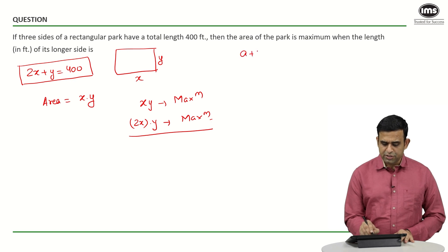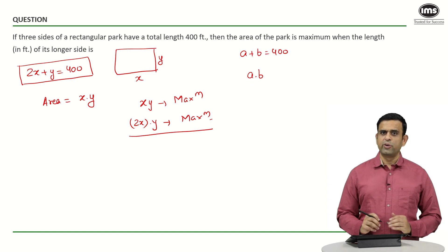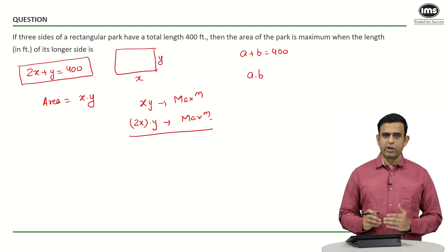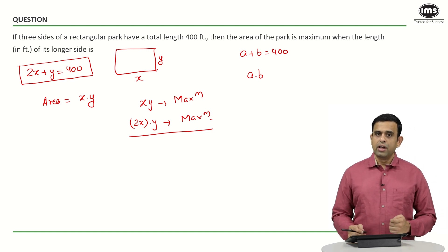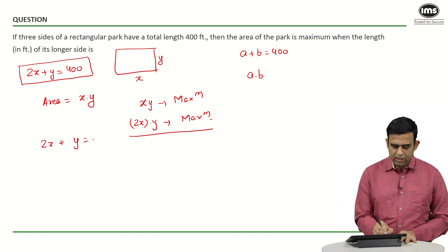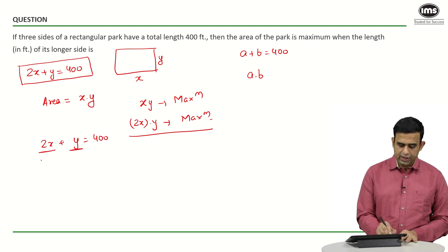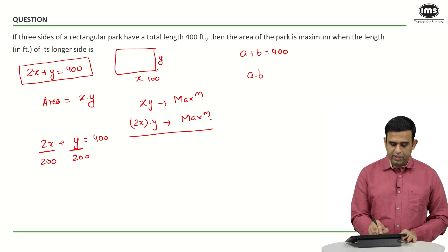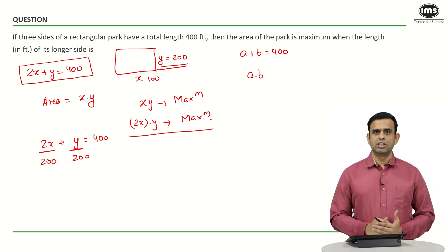In other words, if a plus b equals 400 and I want to maximize a times b, it happens when the two terms are equal. In this case, if 2x plus y equals 400 and I want to maximize 2x into y, then 2x and y should be equal. So 2x will be 200 and y will be 200. This means y equals 200 and x equals 100. Between them, the longer side is 200, and that's my answer.